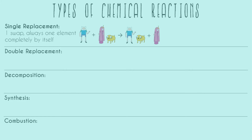We can see from reactants to products, the swap happens where Jake is from. Jake used to be with Princess Bubblegum, and now he's with Finn. Finn used to be completely alone, and now Princess Bubblegum is completely alone.